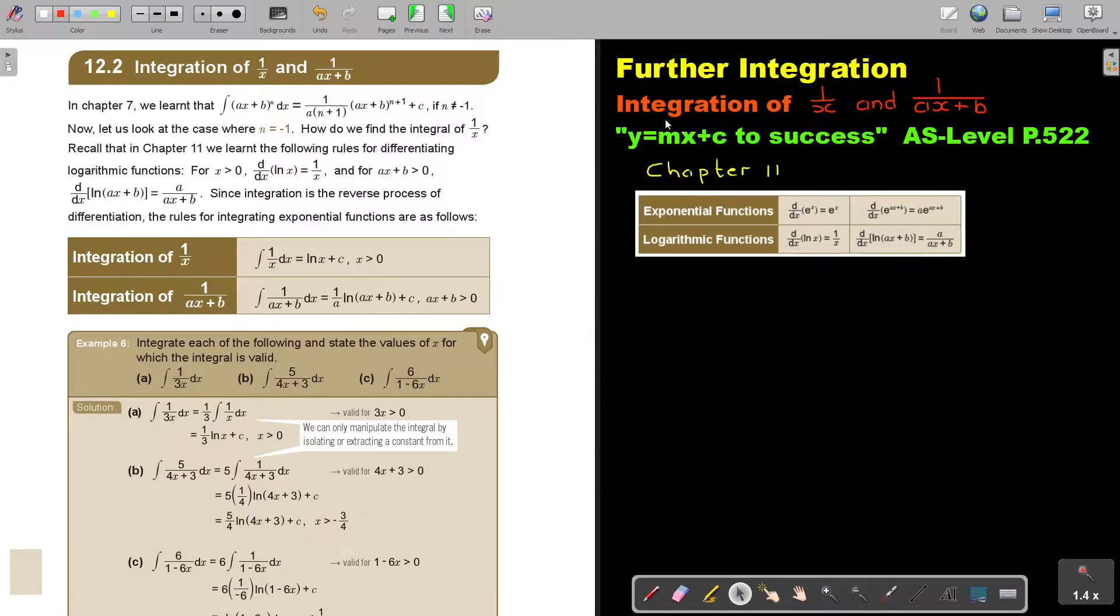In this video, we will look at integration of 1 over x and 1 over ax plus b. You will find this on page 522 in the Namibia AS level mathematics textbook y equals mx plus c to success. Let's start.